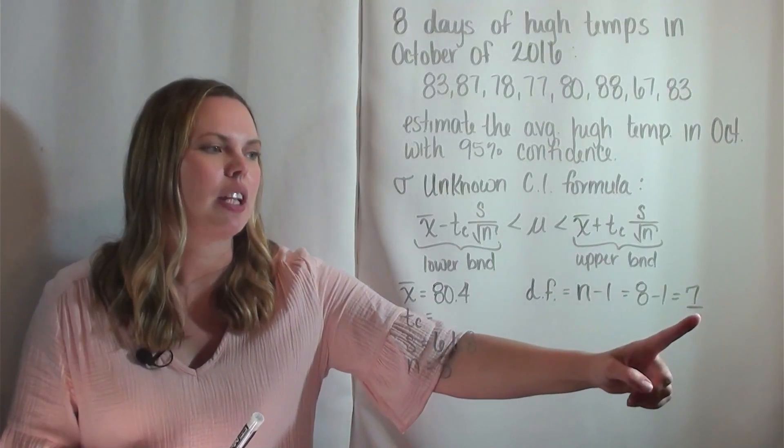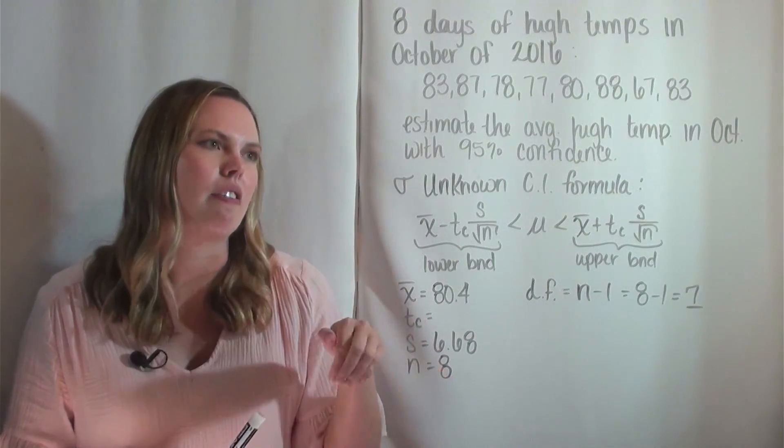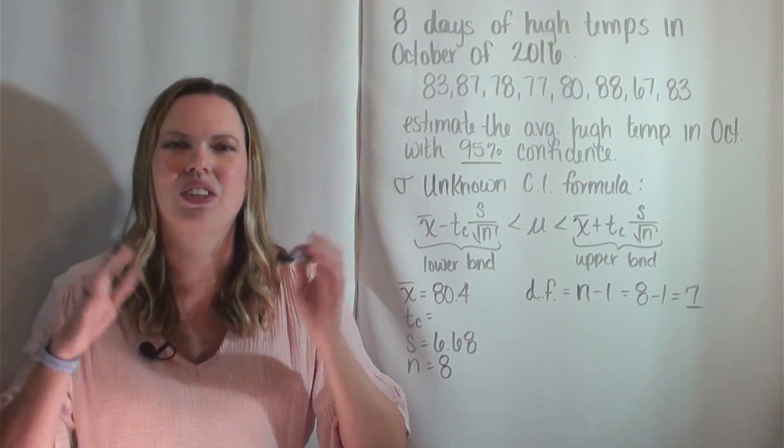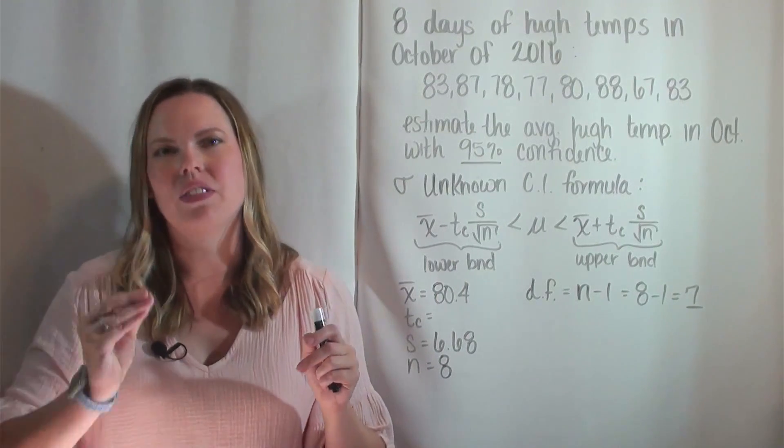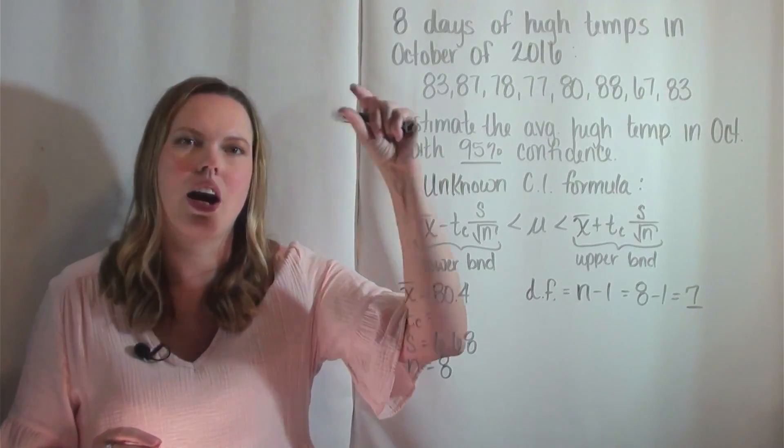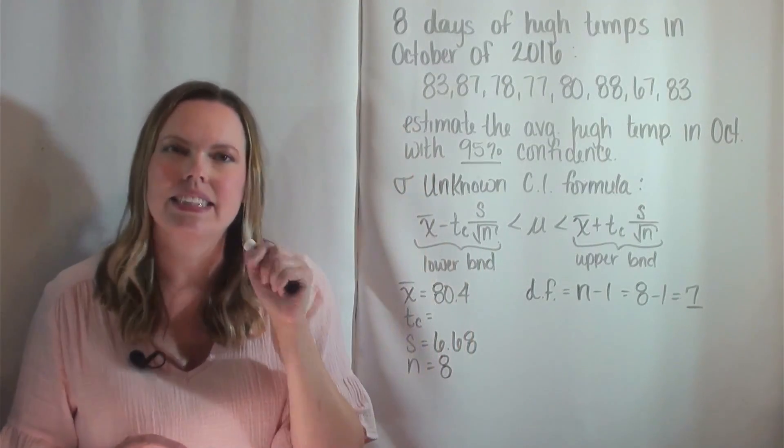Use the degrees of freedom of seven and then a confidence level, which is the 95%. So if you look at that table, you have degrees of freedom down the left hand side, and then look at the top column and one of the top columns should say C, that's your confidence level.